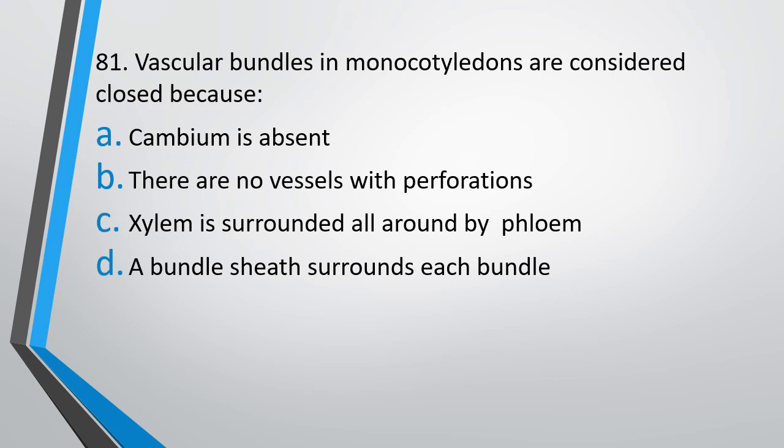Question number 81. Vascular bundles in a monocot are considered closed because? Option A: Cambium is absent. Option B: There is no vessel with perforation. Option C: Xylem is surrounded all around by phloem. Option D: A bundle sheath surrounds each bundle. The correct answer is Option A — vascular bundles in monocots are considered closed because cambium is absent.